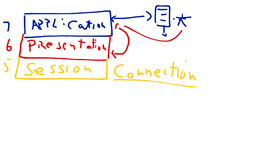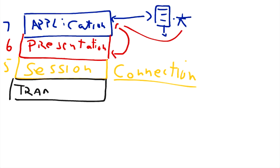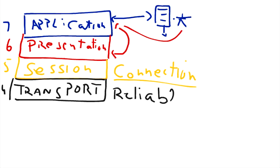We will be discussing about these layers in detail in the next section. Under the session layer we have another layer which facilitates the session layer, and that layer is called the transport layer. The main purpose of the transport layer is the reliable sending of data packets between nodes. It converts the data into packets and sends them reliably to the other node.